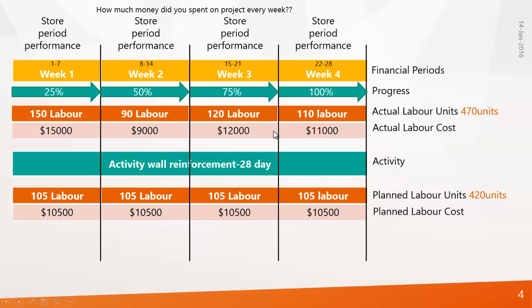Now here comes the scenario: what if your client or project manager wants to know how much money was spent on this project every week — how much labor and cost was engaged every week? To deliver this requirement, we need to create financial periods. You can create a financial period like week 1 (day 1–7), week 2 (day 8–14), week 3 (day 15–21), and week 4 (day 22–28). This is how we create financial periods.